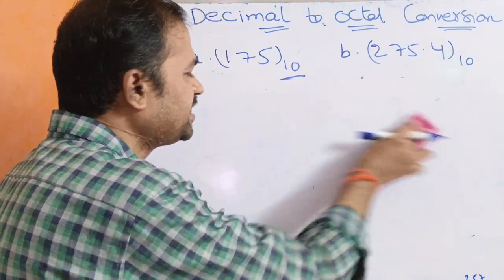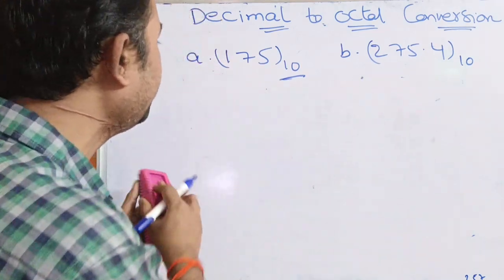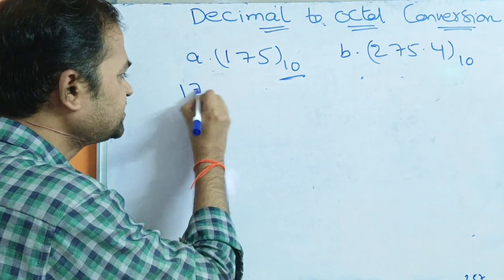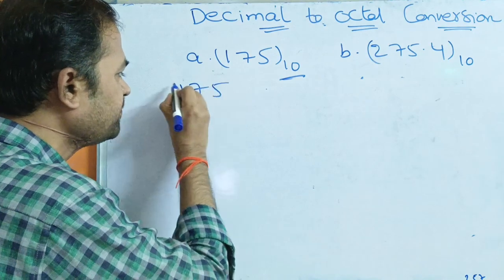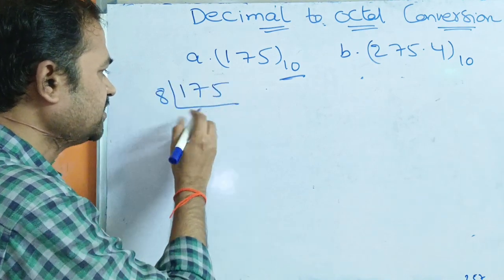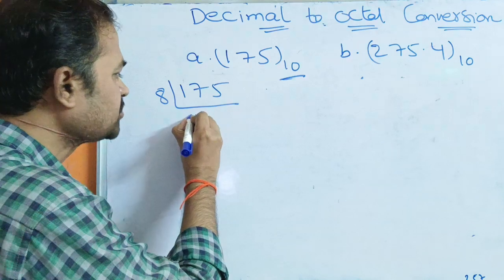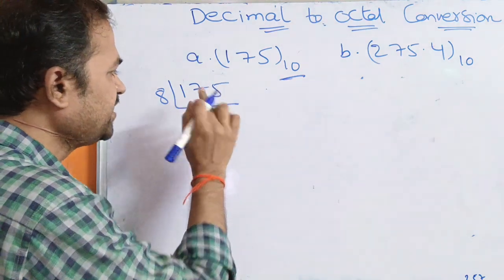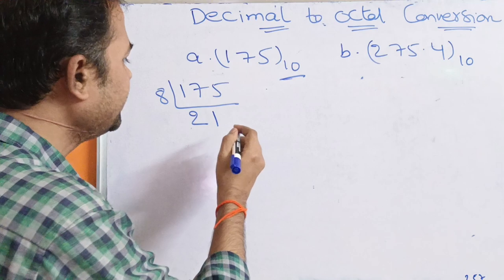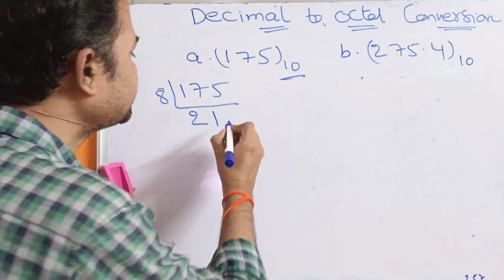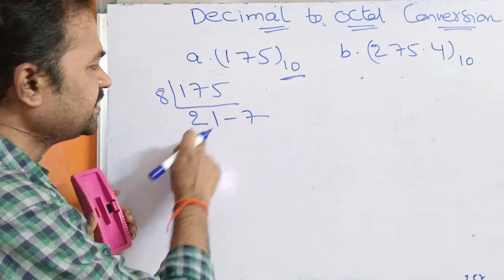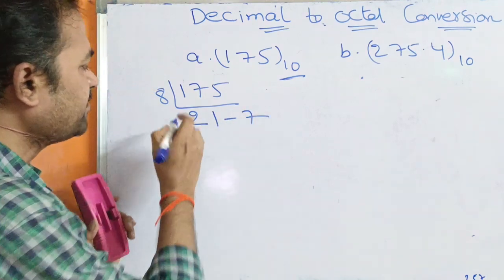Here two examples are given — two decimal numbers. Let us solve the first example. The number is 175, and we have to divide it by 8. 8 twos are 16, so 15 minus 8 equals 7. The quotient is 21 and the remainder is 7.